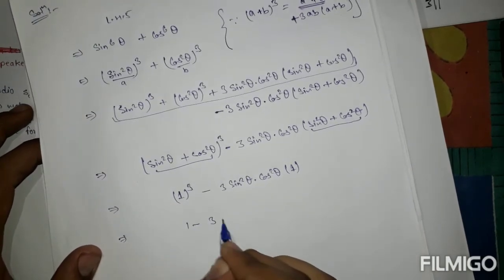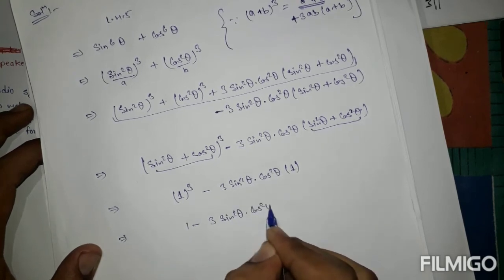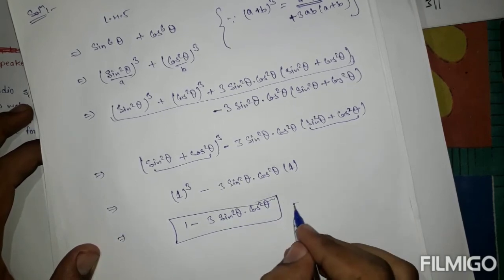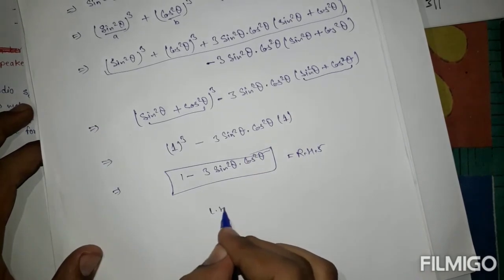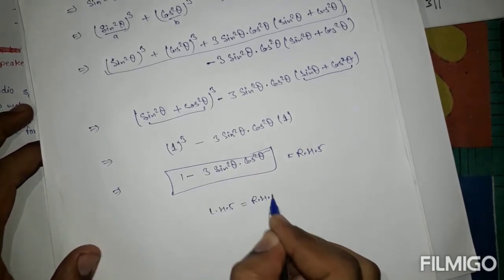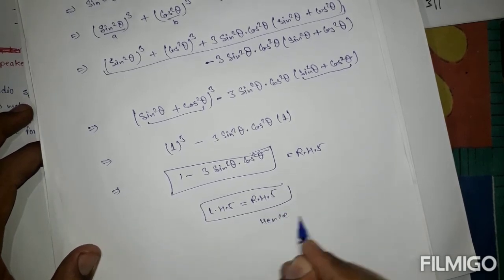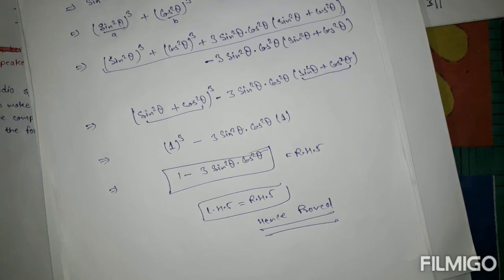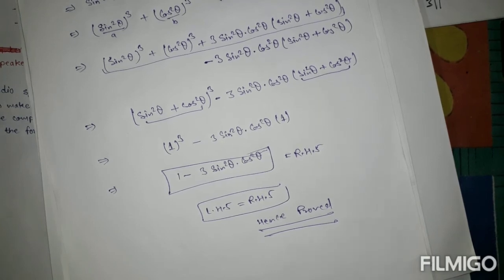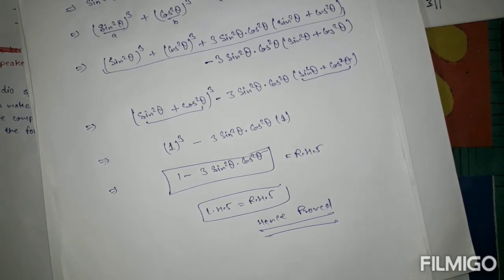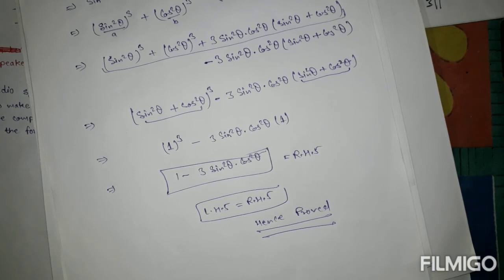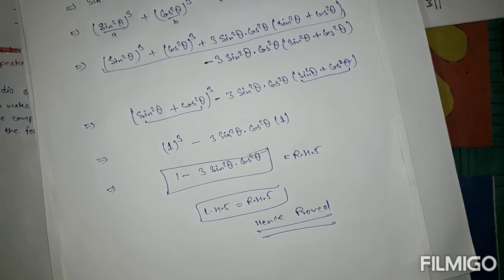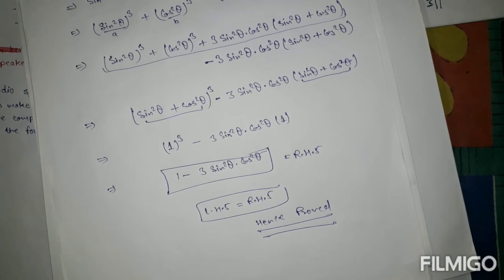This equals 1 - 3sin²θ·cos²θ, which is our RHS. So LHS = RHS, hence proved. In this class we have solved 5 to 6 questions. We will do further questions in our next class. I hope you understood these questions with the easy method. Thank you for watching.